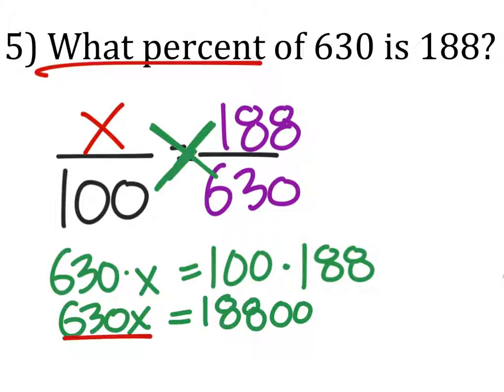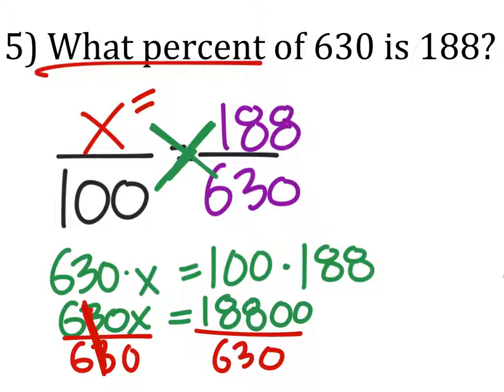And then solving for X, I would divide both sides by 630. So that the 630 cancels out into a coefficient of 1. And this would tell me my X value, which is 29.8. And this is a percent.